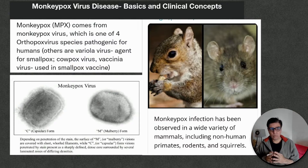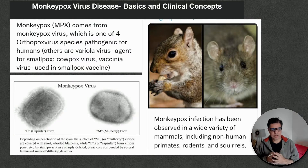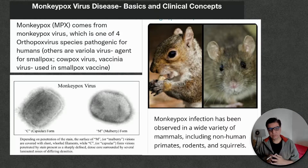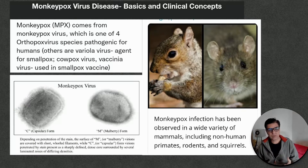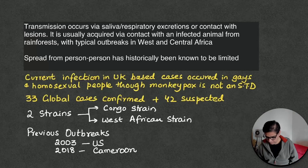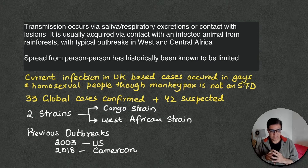Currently, more cases have been detected than expected — a few in Canada, Portugal, Spain, and the United Kingdom. This has raised fears about whether we are going to confront another pandemic, having already faced COVID. However, historically these outbreaks have been small and contained, and the spread has never led to a global threat.